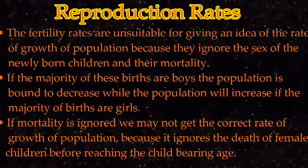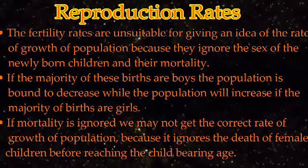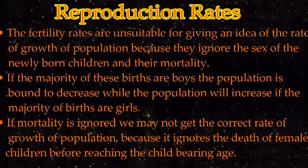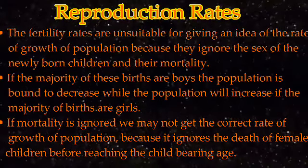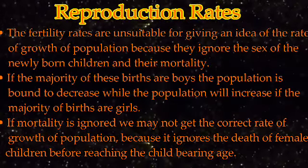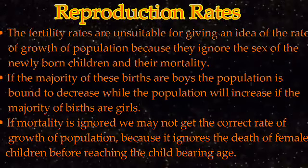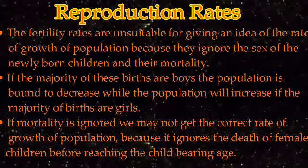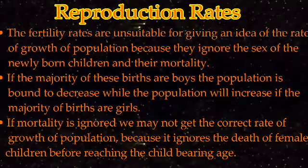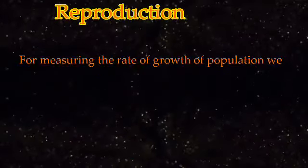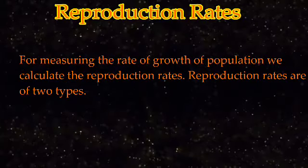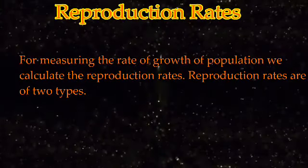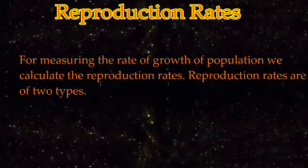The difference between fertility and reproduction is that in fertility only birth rate is taken into consideration, whereas under reproduction both birth and death rate are considered, based on which one can judge about the population. For measuring the rate of growth of population we calculate reproduction rates. Reproduction is measured by gross reproduction rates or net reproduction rates, which generally indicate the ratio between the sizes of the daughters and mothers generations.